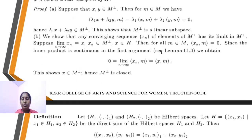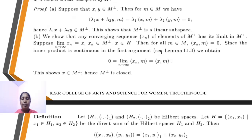Proof. Let h, y belong to the orthogonal complement of M, and m belongs to capital M. We have λ₁h + λ₂y, m = λ₁⟨h, m⟩ + λ₂⟨y, m⟩ = 0. This shows that the orthogonal complement of M is a linear subspace.